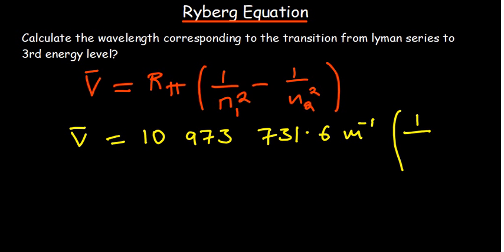The Lyman series is associated with the first energy level. You need to know Balmer series is the second, third is associated with Paschen, fourth is Brackett, and finally the fifth is Pfund. So you have 1 over 1 squared as your initial, and then your final is 3 since it's going to the third energy level.